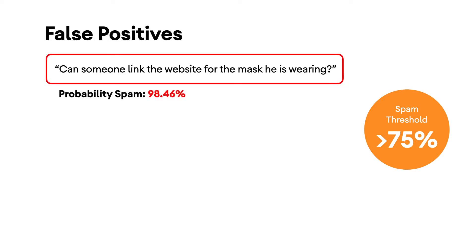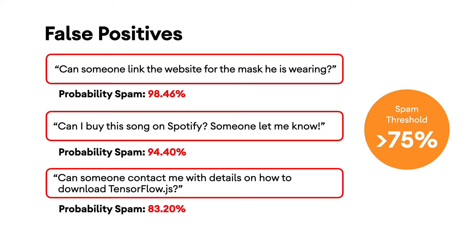However, after getting a few users to try the system, you will likely find legitimate comments that are marked as spam, as shown. These are also known as false positives. As you can see, all of these comments have a score over 75%, leading them to be marked as spam, even though they're genuine questions. One trivial thing we can do at this point is to increase the confidence threshold of the spam classification to